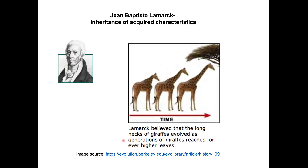Jean-Baptiste Lamarck was the first scientist to suggest a theory of evolution, so he usually gets mentioned based on what he got wrong, not what he got correct. What he did get correct was suggesting that organisms change over time and that evolution is responsible for those changes. But the mechanism he suggested wasn't quite correct — the mechanism he suggested was inheritance of acquired characteristics.